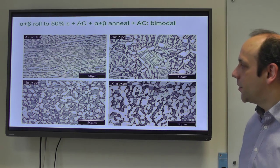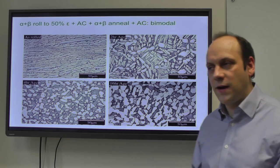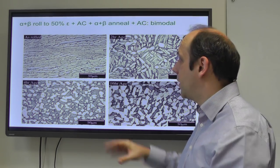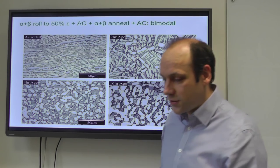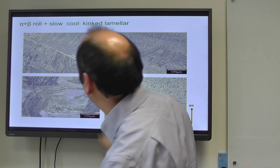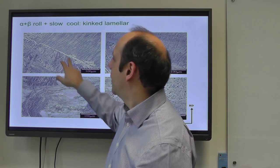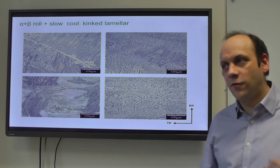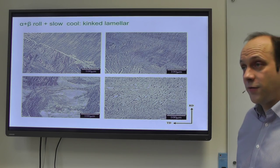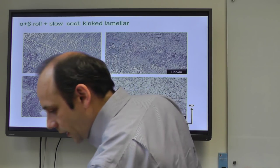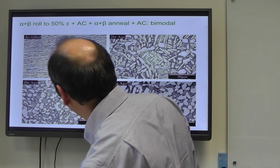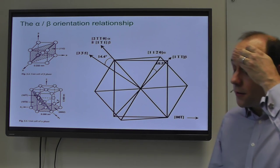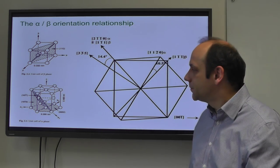The bimodal microstructure tends to be favoured from a fatigue crack initiation perspective, whereas the lamellar structure - particularly with less grain boundary alpha - would be favoured from a toughness perspective. It depends slightly on what properties you're looking for.